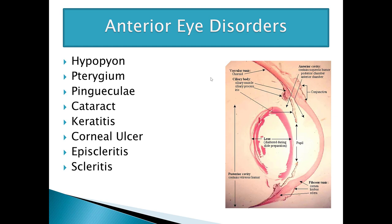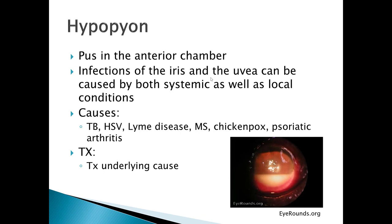The first thing we're going to talk about is hypopyon. This is very much like a hyphema, but instead of having blood in the anterior chamber, the cause is pus in the anterior chamber. Infections of the iris and the uvea can be caused by both systemic and local conditions. Some causes include underlying diseases such as tuberculosis, herpes simplex virus, Lyme disease, multiple sclerosis, chickenpox, and psoriatic arthritis. Treatment is to treat the underlying condition while monitoring for resolution and checking intraocular pressures.